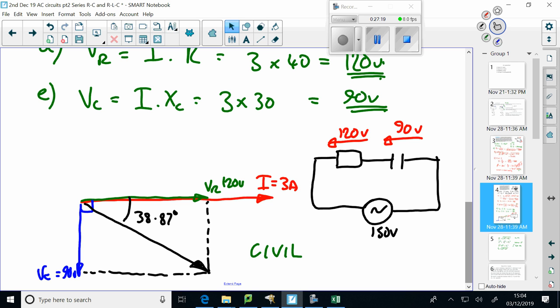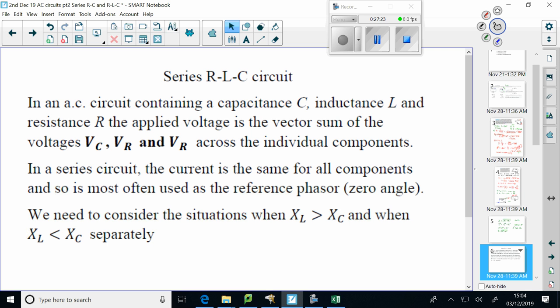So, having done RL and RC separately, what we're going to have a look at now is the series RLC circuit. It's a circuit where we've got all three components in the series. So in an AC circuit containing capacitance C, inductance L, and resistance R, the applied voltage is the vector sum of the three voltages VC, VR, and VL. In a series circuit, the current is the same for all components, and so is most often used still as the reference phasor. Because it's series, the current is the same for all three. We need to consider the situations where one, XL is greater than XC, and two, when XL is less than XC, separately.